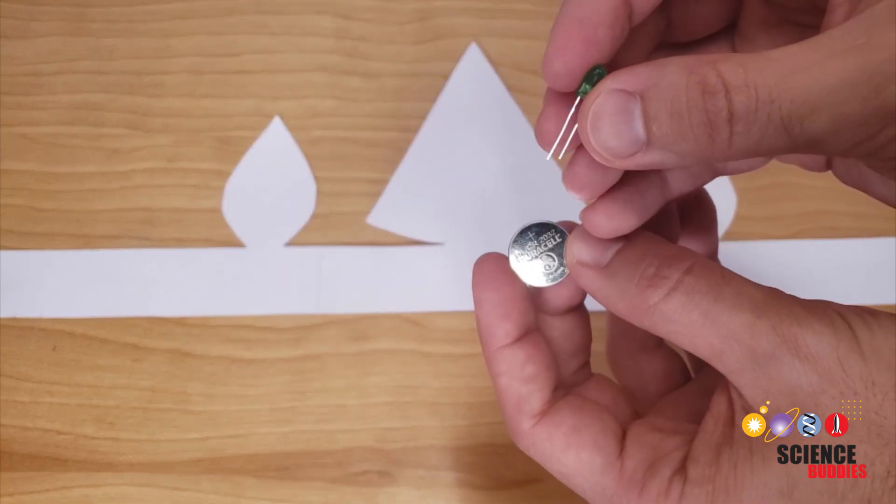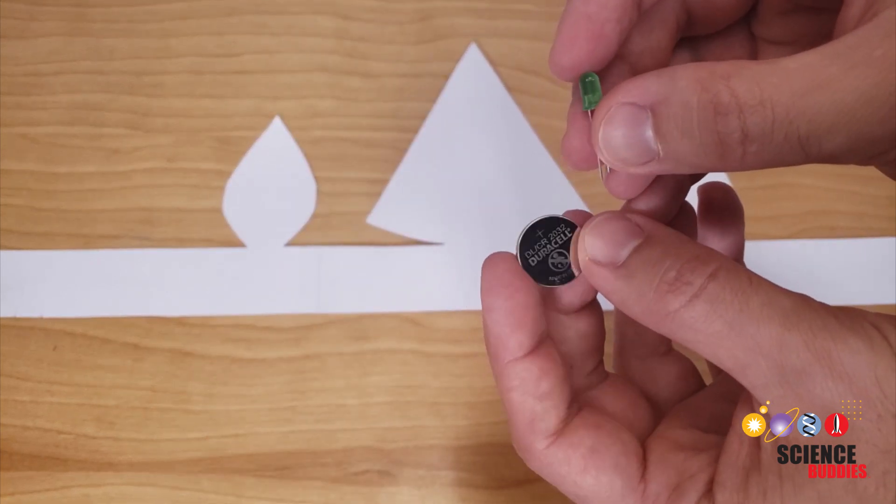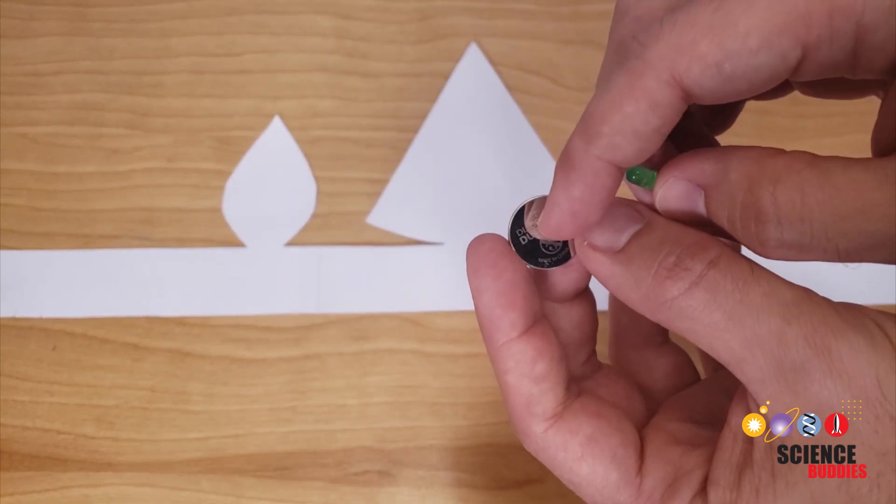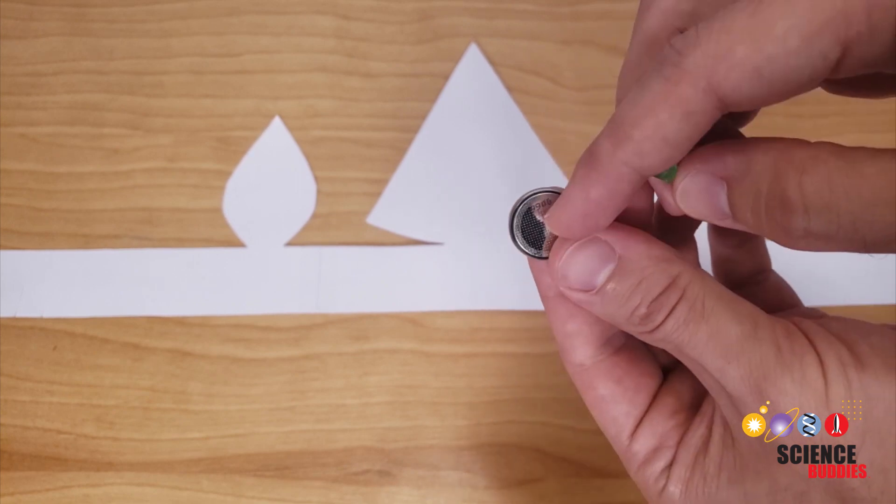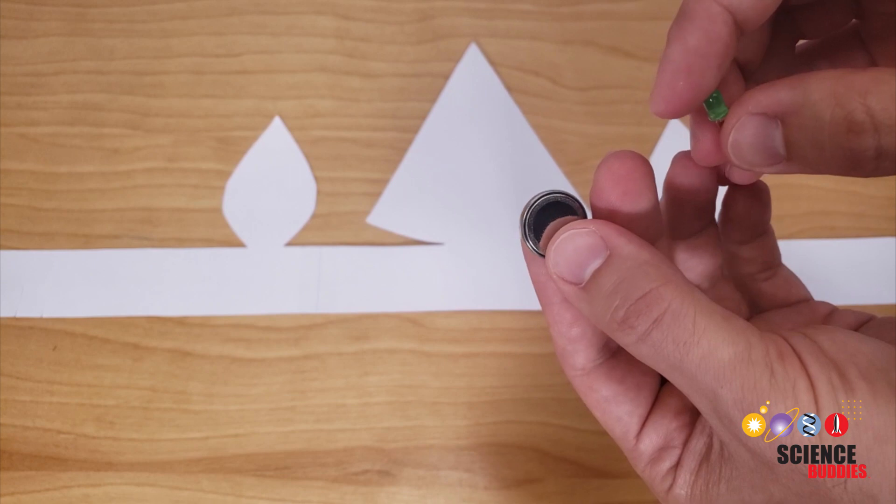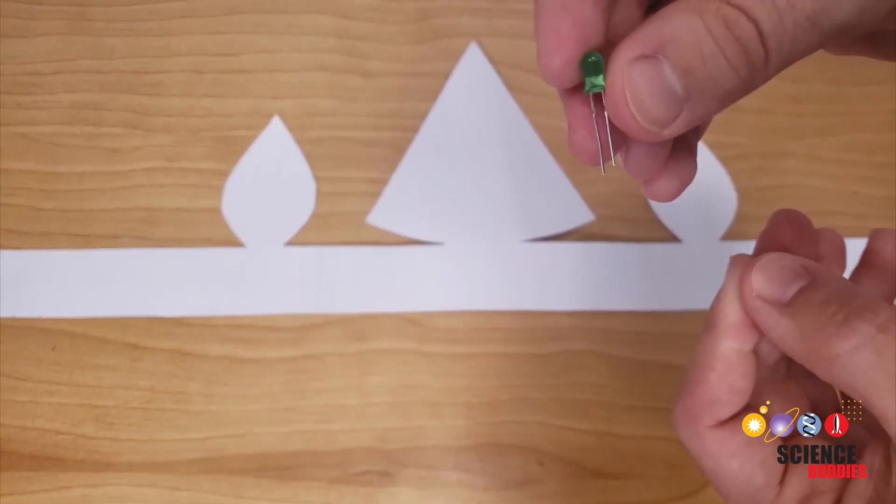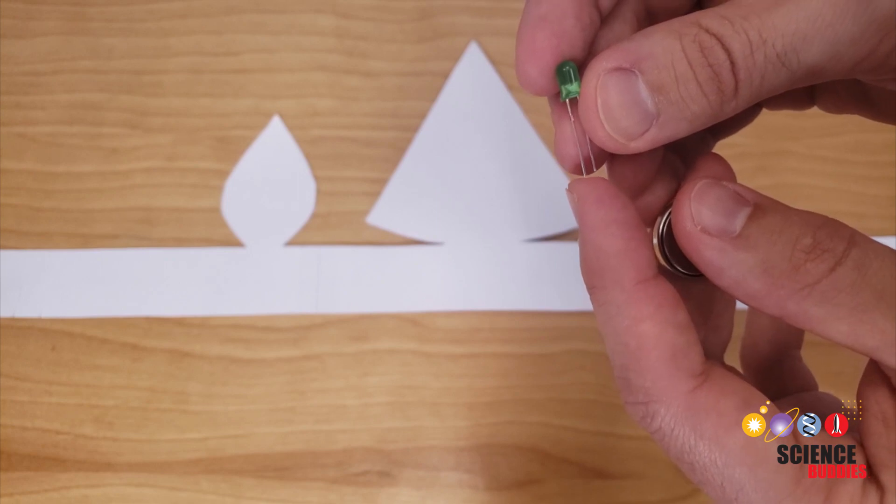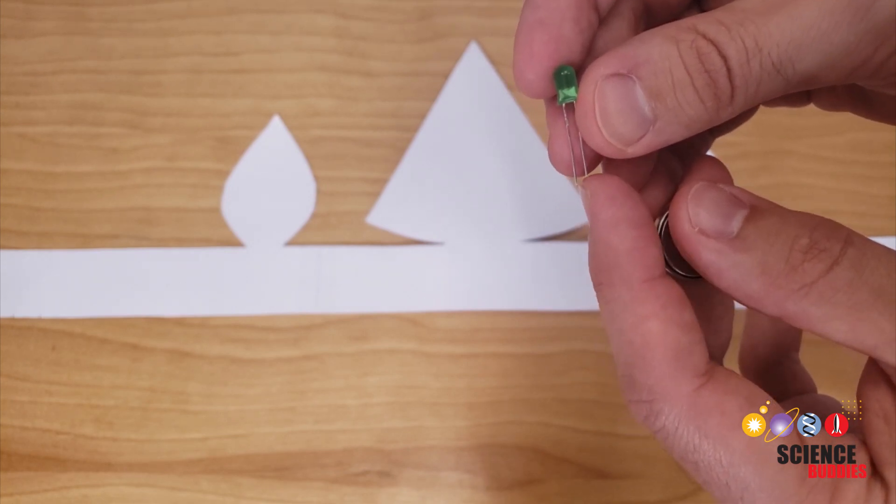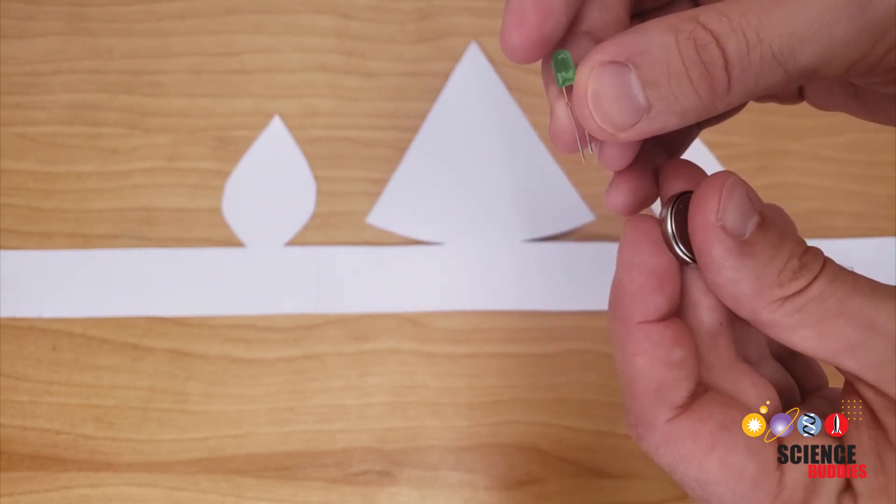Before we do that let's talk a little bit about the battery and the LED and making a circuit. The battery has two sides, the positive side with a plus sign and the back or negative side which does not have any writing on it. The LED also has two sides although they're not labeled. The longer of the two legs is the positive side and the shorter of the two legs is the negative side.